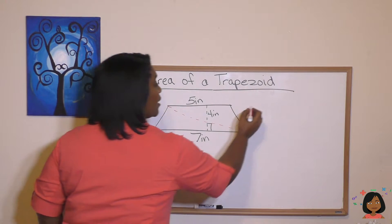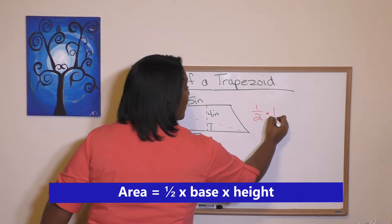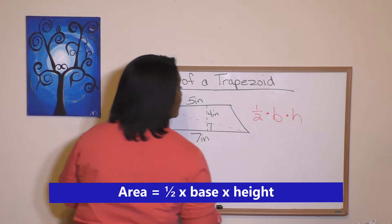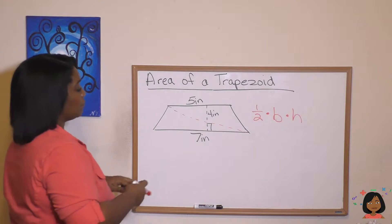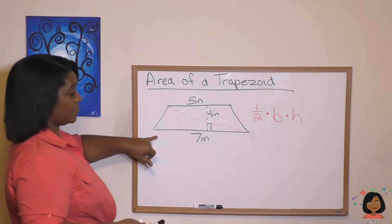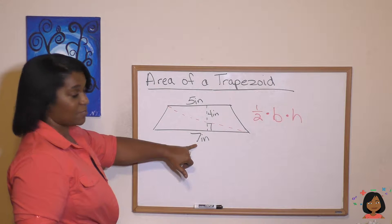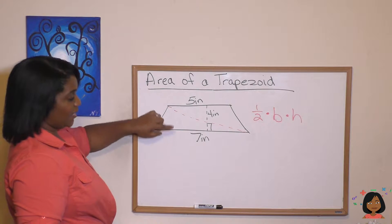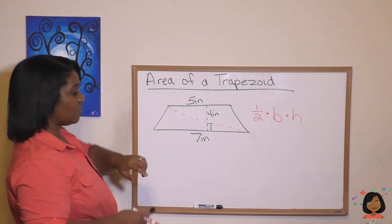Well, the formula is one half base times height. Okay, well, let's take a look. If we did this one first, we have a base. It's seven inches. We also have a height. The height of this is going to be four inches.